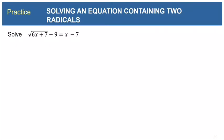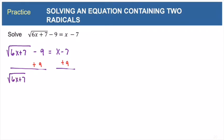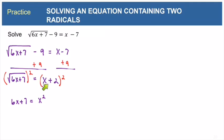Here is another practice problem. I would encourage you to pause the video and try this one by yourself. Now I'm going to go through the solution. We need to start by isolating the radical, so we add 9 to both sides of the equation. That gives us square root of 6x plus 7 on the left, and negative 7 plus 9 is 2, giving x plus 2 on the right. Now to eliminate the radical, we square both sides. On the left, squaring the radical expression gives us 6x plus 7. On the right, squaring the binomial x plus 2 gives x squared plus 2x plus 2x plus 4, which is x squared plus 4x plus 4.